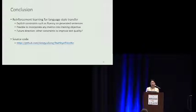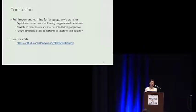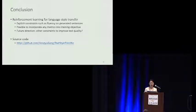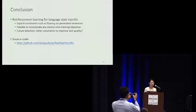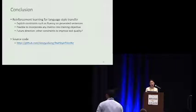In conclusion, we use a reinforcement learning framework for language style transfer and are able to put explicit constraints on the generated sentences in terms of semantics, style, and fluency. This framework is flexible enough to incorporate other metrics even if they are not differentiable. One future direction is how to design better constraints to further improve the quality of generated text. We have released our implementation on GitHub.